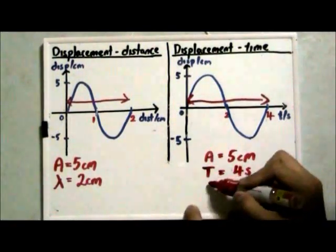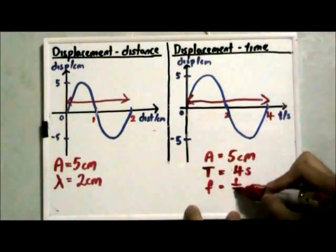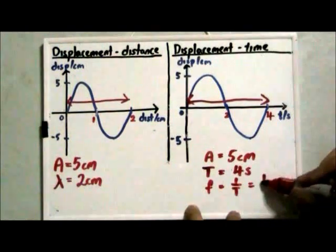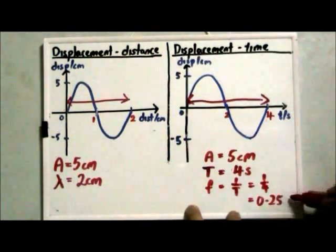And with period, we can find the frequency. Frequency is equal to 1 over period. And this will give us 1 over 4, which is 0.25 Hz.